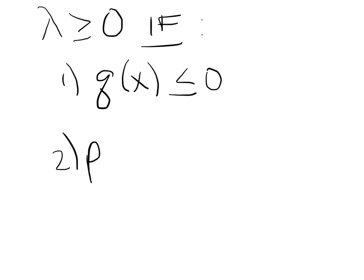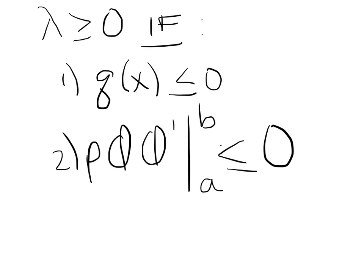There's also another theorem that you can show that lambda is greater than or equal to 0 if two things hold: 1) q(x) is less than or equal to 0, and 2) p times φφ' evaluated from a to b is less than or equal to 0. That's useful because there are multiple cases that you will get for y depending on the eigenvalue, and it's nice to eliminate cases where it's greater than or less than 0.